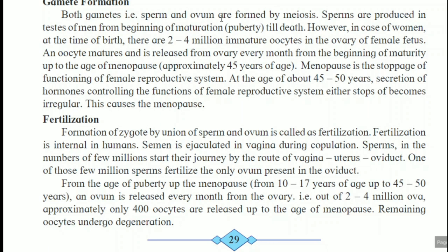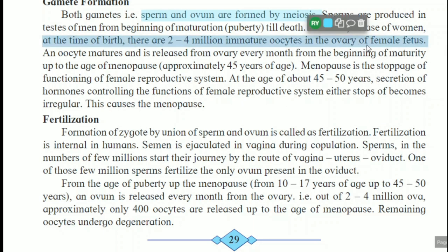Both gametes — sperms and ovum — are formed by the meiosis process. Sperms are produced in the testis of men from the beginning of maturation, that is the puberty stage, till death. However, in the case of women, at the time of birth there are 2 to 4 million immature oocytes in the ovary of the female fetus — that means when the baby girl is growing inside her mother's uterus.